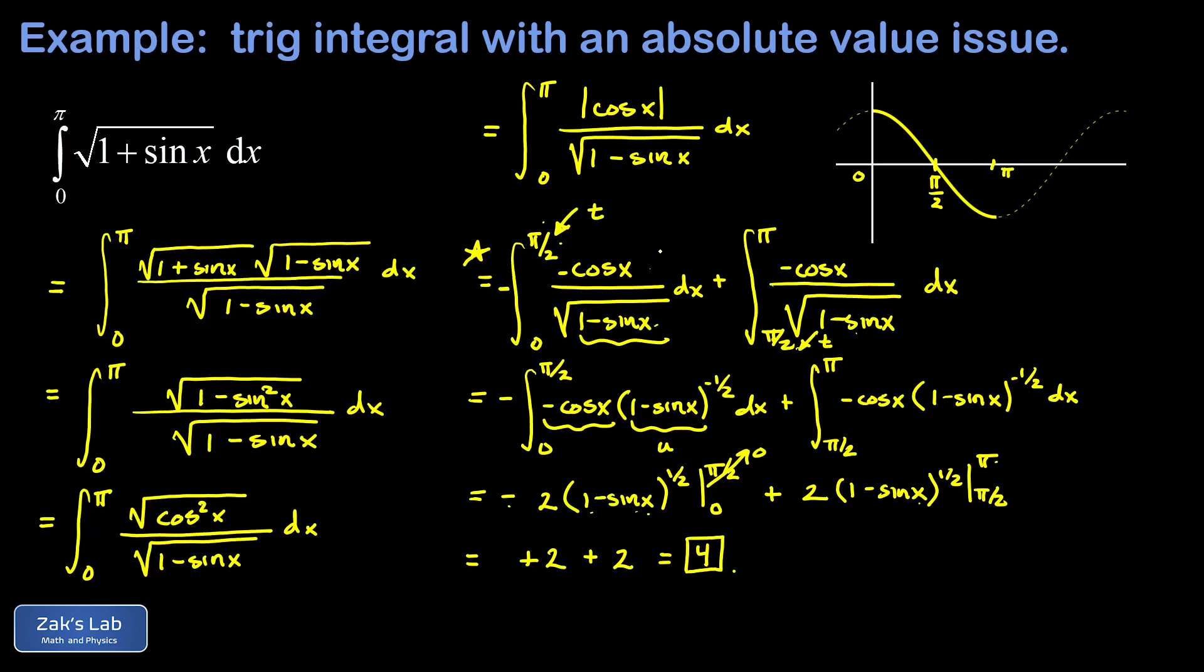You just replace the problematic limit with a t. You do the antiderivative exactly the same way we did, you take the limit as t goes to pi over 2 and you're going to find the same answer—there's nothing problematic in these limits.